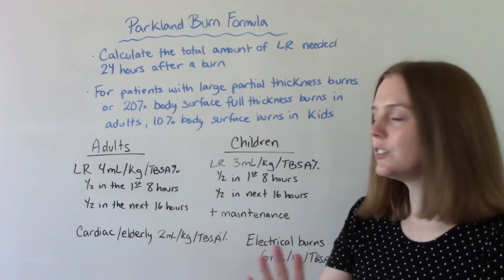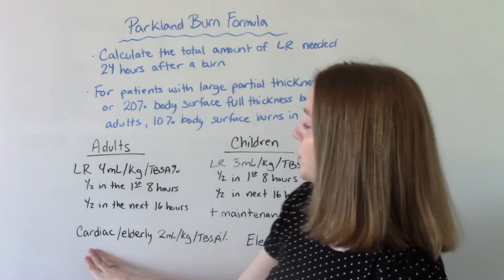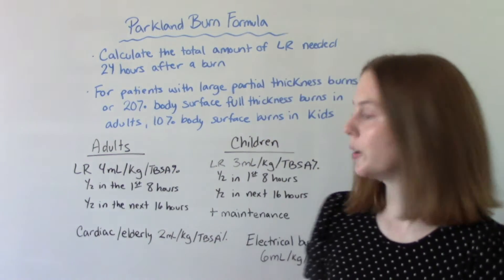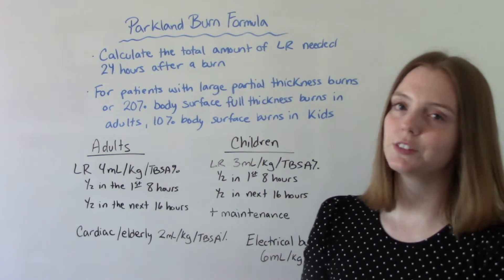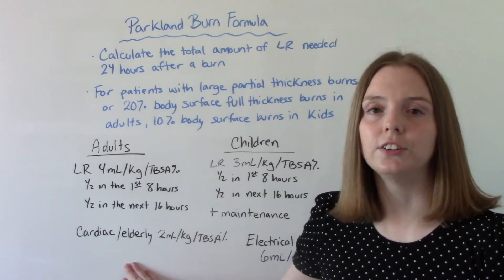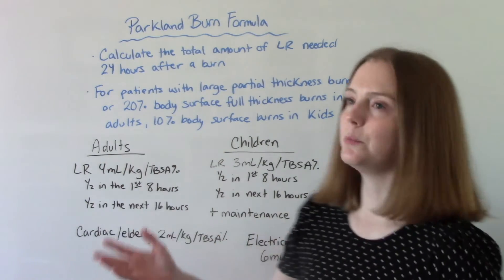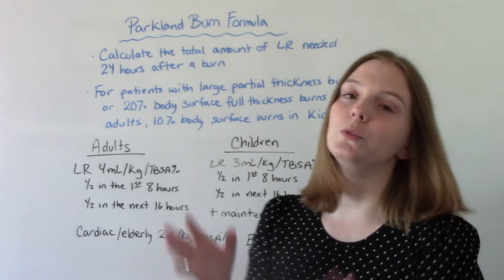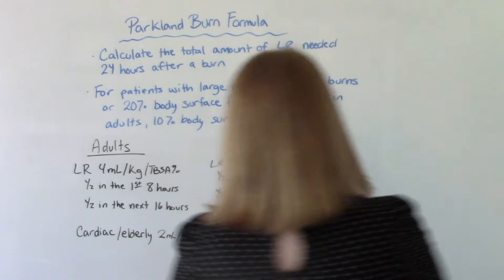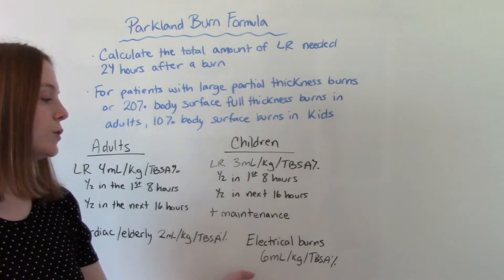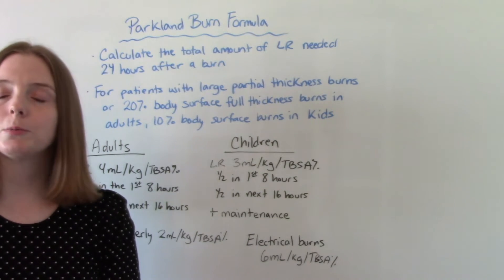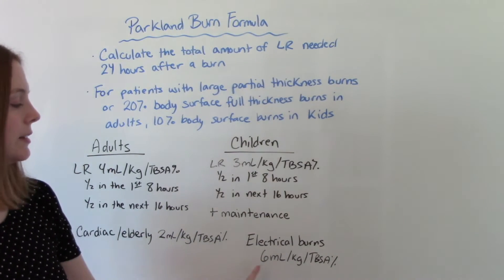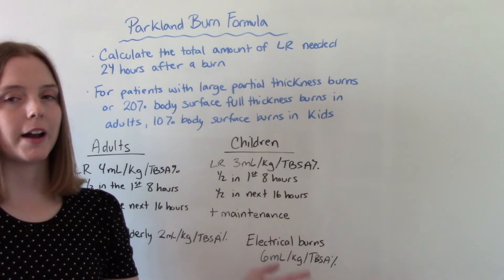There are some special populations we want to make sure to mention. Patients who have cardiac disease — a lot of fluid replacement might not be safe for them — so a smaller amount, like 2 mls per kg per total body surface area percentage. Similarly for frail elderly: just because you're an adult doesn't mean you're a large person, so frail elders also need a smaller amount. Another special type is electrical burns, which will require a higher amount of fluid replacement in that first 24 hours — 6 mls per kg per total body surface area percentage.